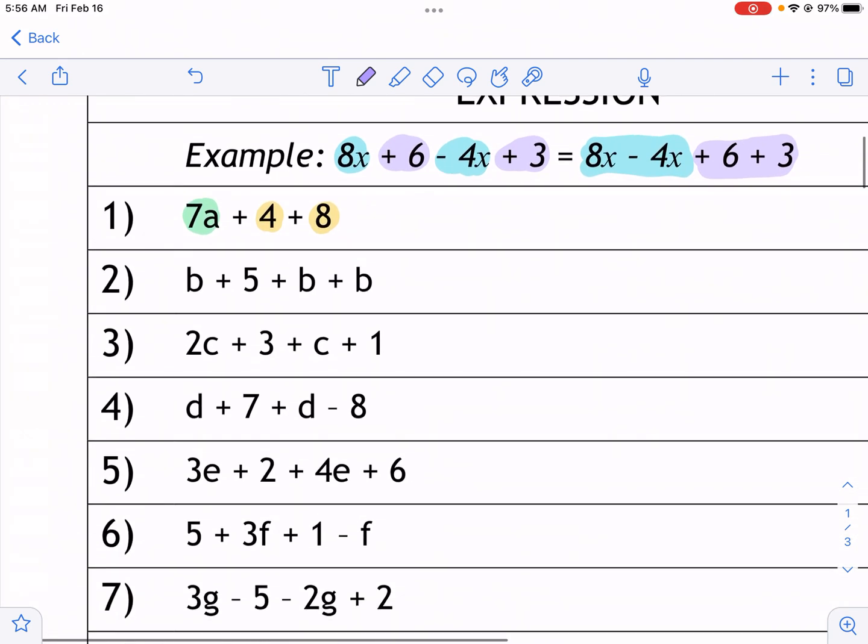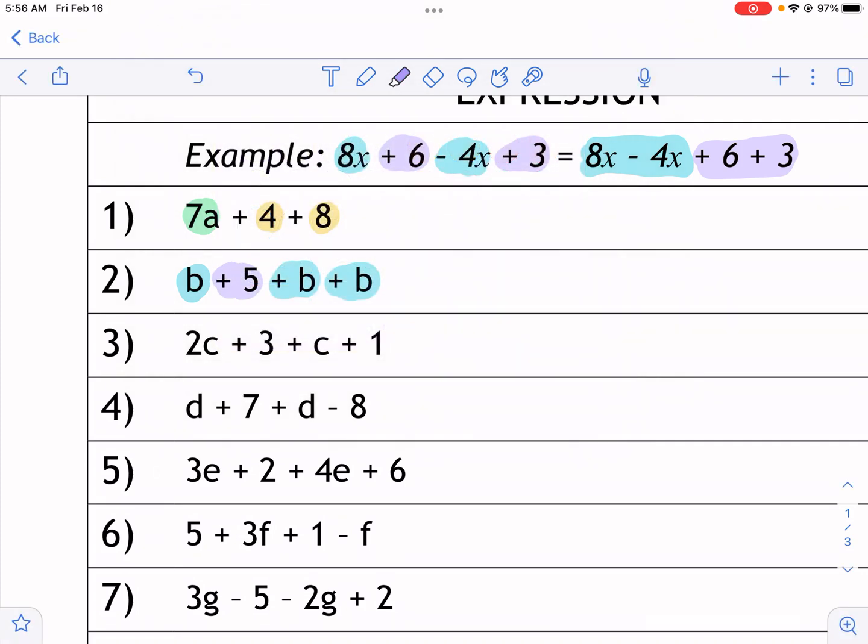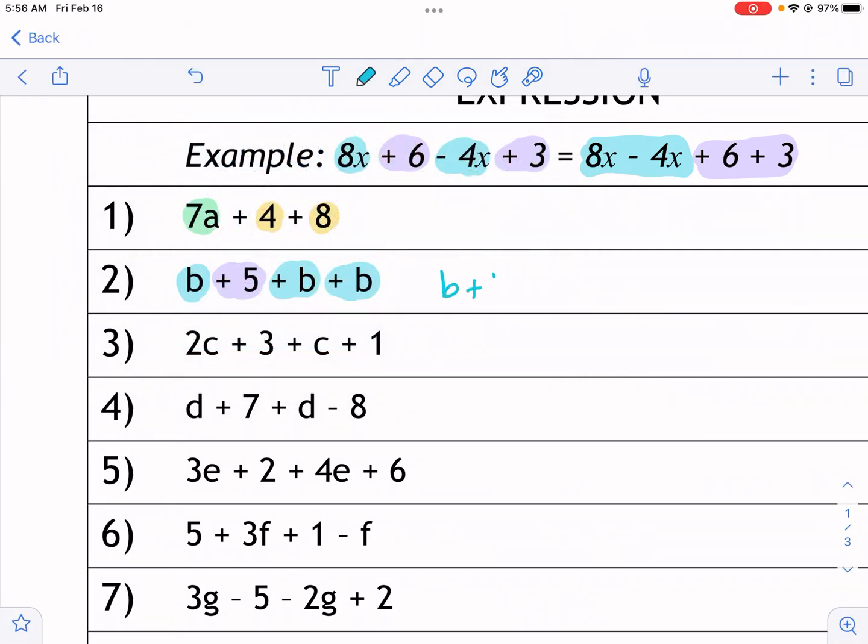So let's continue number two. And we're going to use this same pattern of thinking. So first, I'm going to just highlight with the sign in front, all these variables. And then I'm going to highlight all my numbers. So from here, I'm going to regroup them all together. I have b plus b plus b.